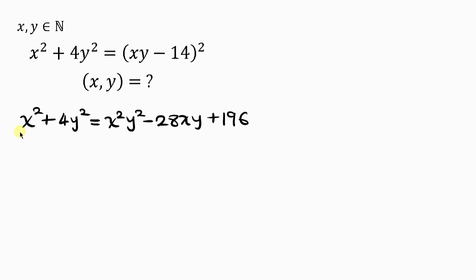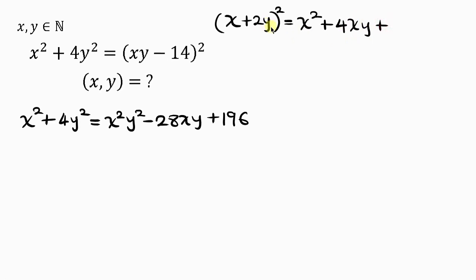Our next step will be to complete the square on the left-hand side — in other words, make the left-hand side a perfect square. The left-hand side is very close to (x + 2y) squared, which equals x squared plus 4xy plus 4y squared. We already have x squared plus 4y squared; the only difference is 4xy. So we add 4xy to the left to make it a perfect square: x squared plus 4xy plus 4y squared.